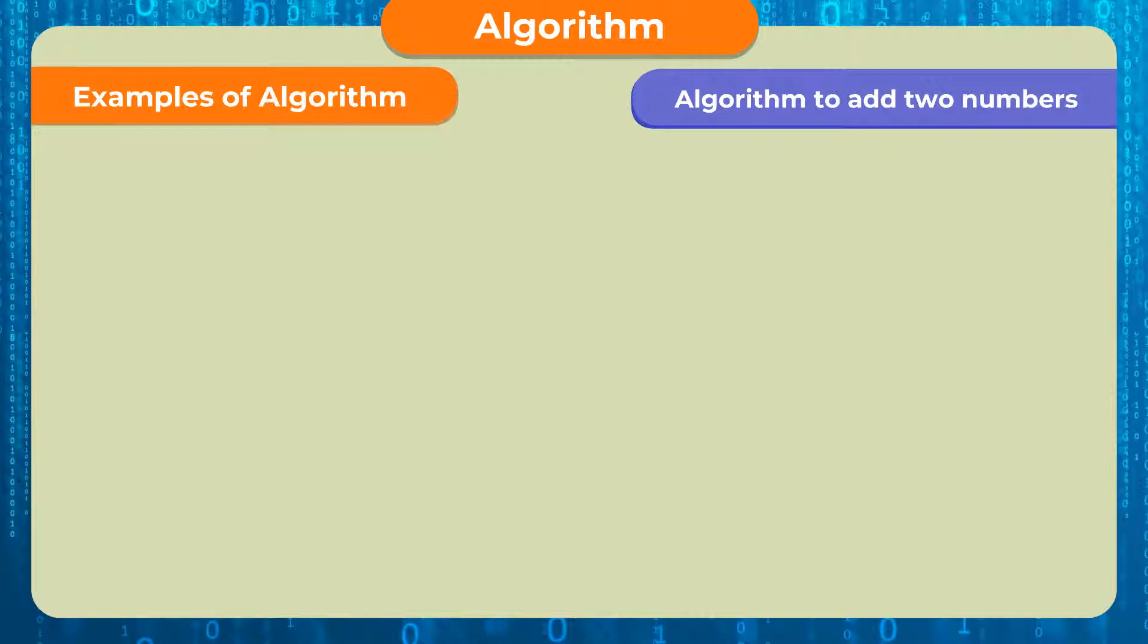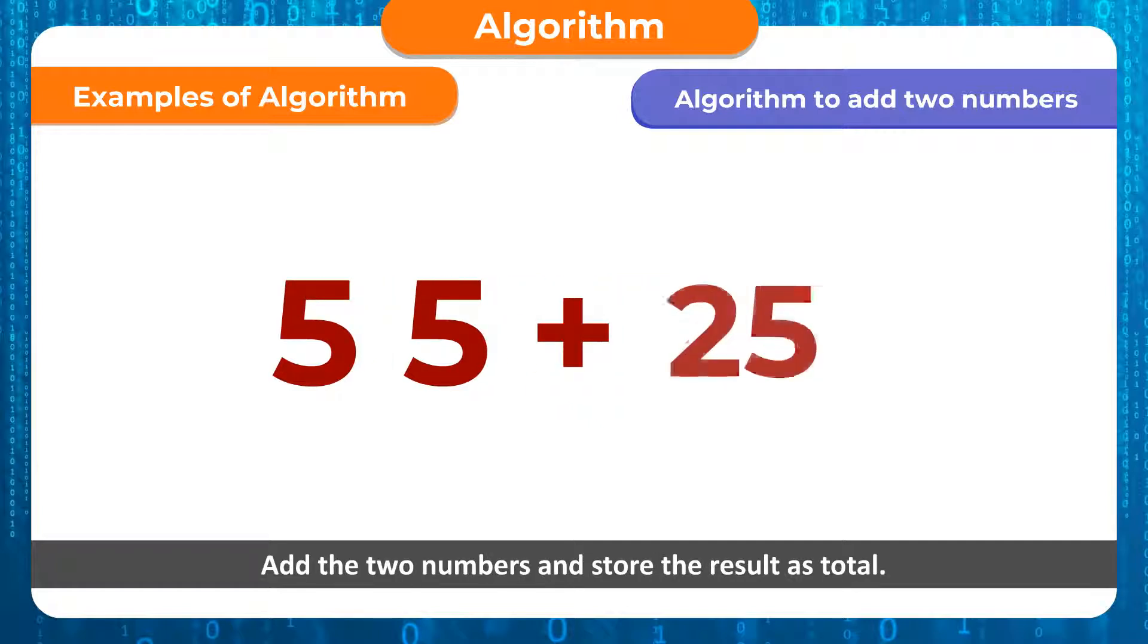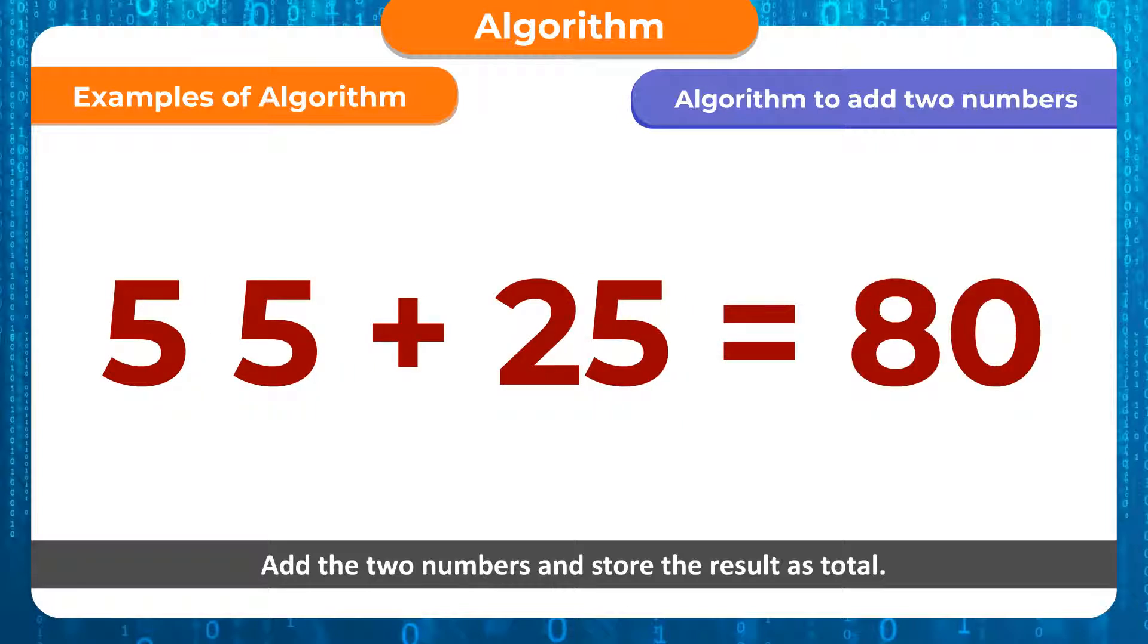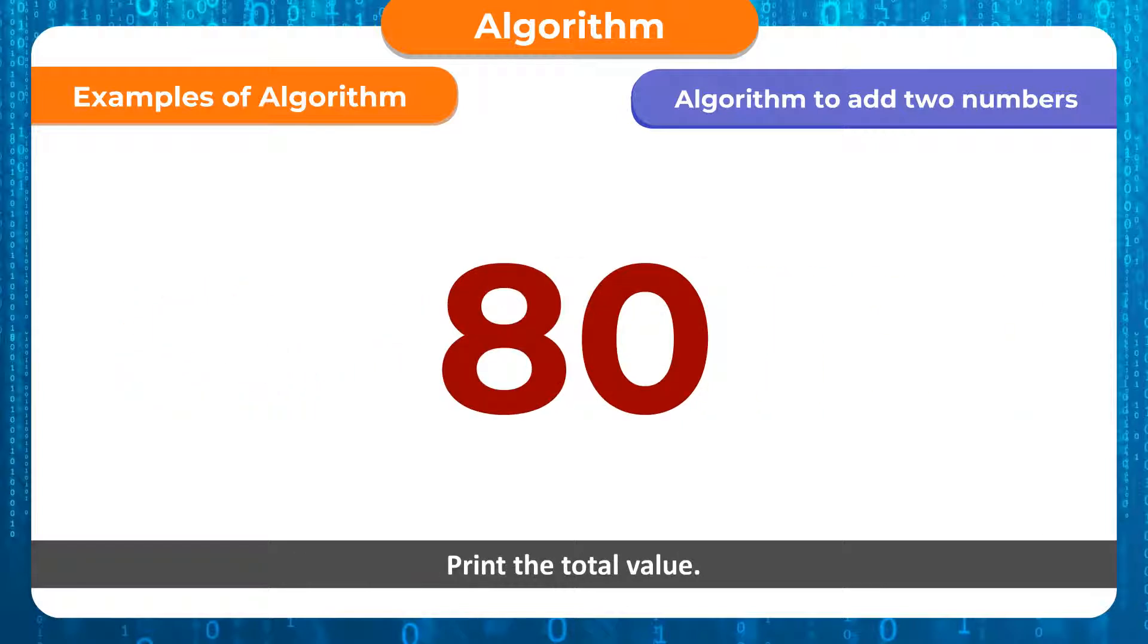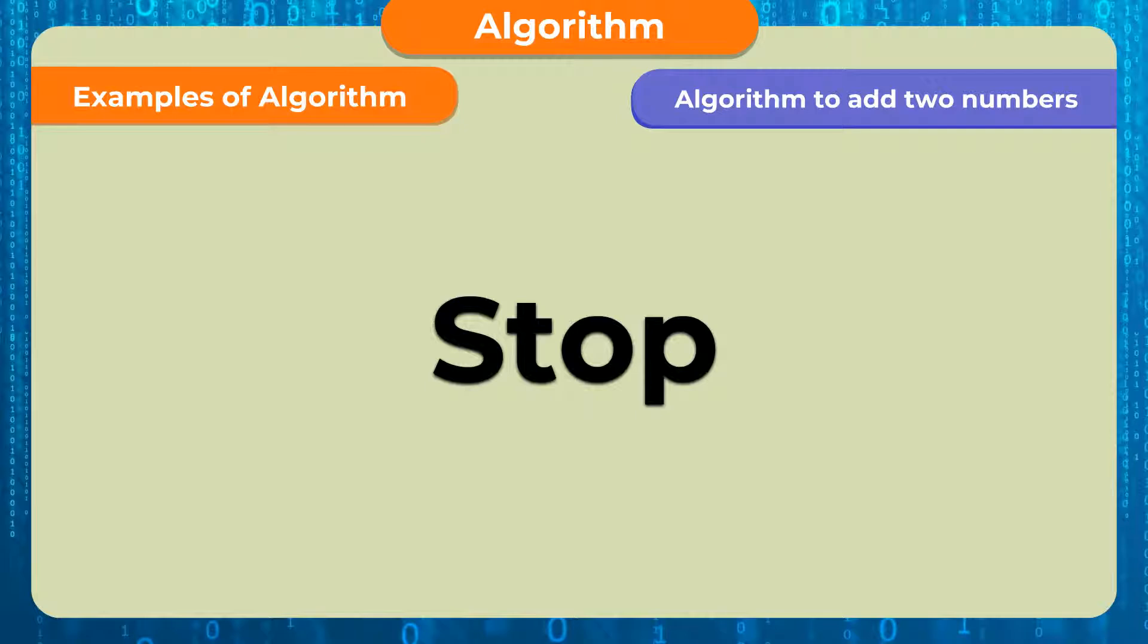Algorithm to add two numbers. Step 1: Start. Step 2: Read the two numbers. Step 3: Add the two numbers and store the result as total. Step 4: Print the total value. Step 5: Stop.